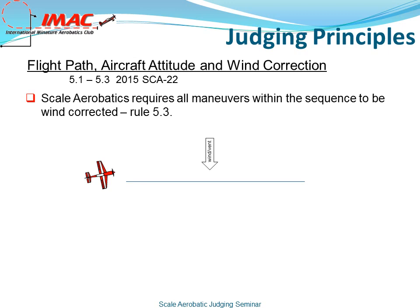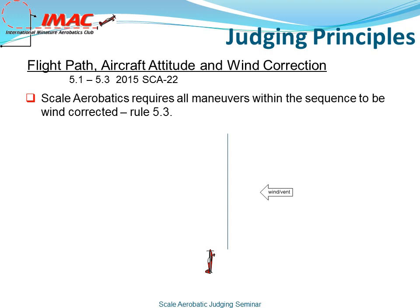Pitch and yaw may be used for wind correction. In the illustration below, the plane is yawed into the wind, and therefore the track will be in a straight line. The same applies to a vertical line — add the wind component and the vertical line will be blown off track. With proper wind correction, the plane would pitch the nose into the wind and fly a perfectly vertical line.